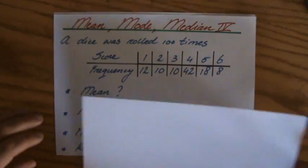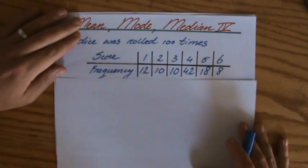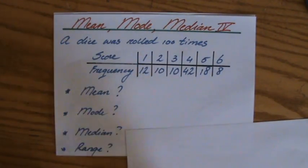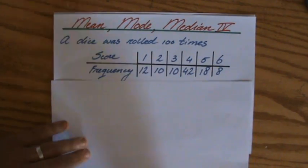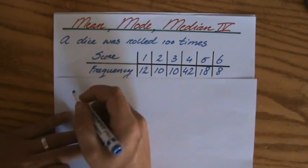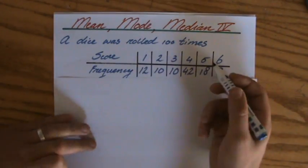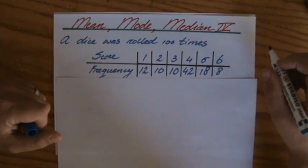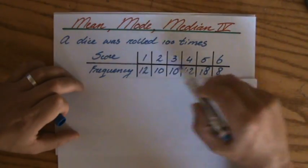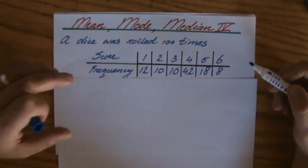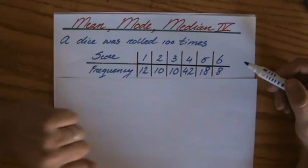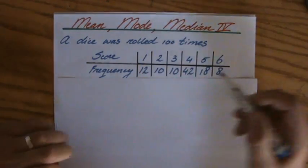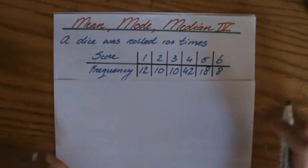A very common mistake is the following: if you have to calculate the mean, some of you will say, well, that is going to be 1 plus 2 plus 3 plus 4 plus 5 plus 6, divided by the amount of values, 6. But you don't have 6 values — you have a hundred values.